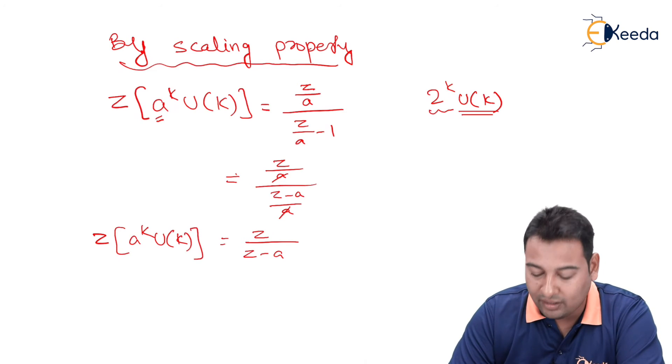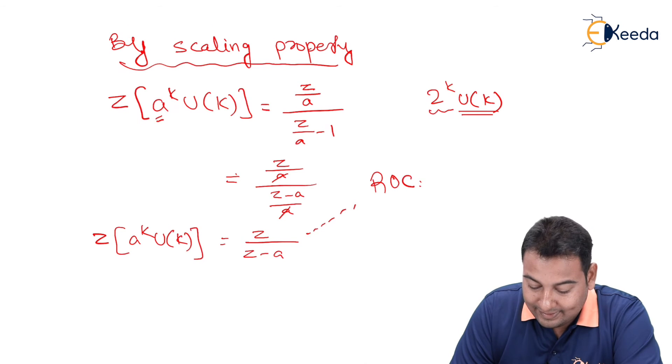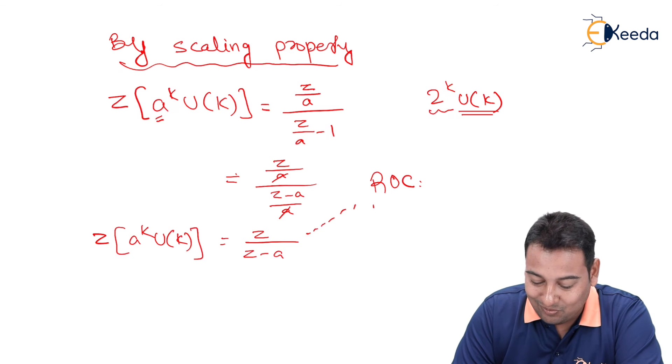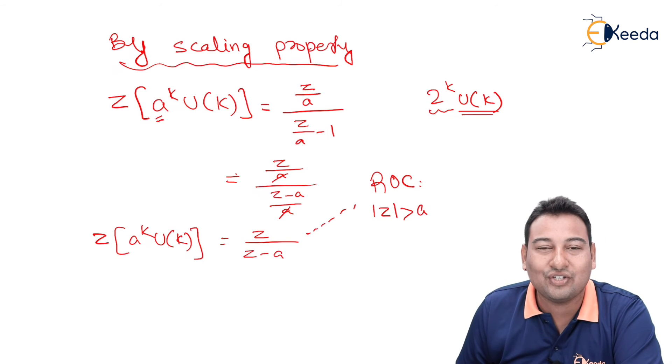What is ROC? z minus a, that means z is bigger. So mod z greater than a is the ROC. So in this video we discussed change of scale property. In the next video we'll discuss multiplication property. Thank you.